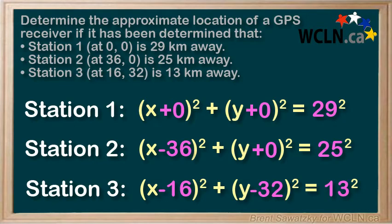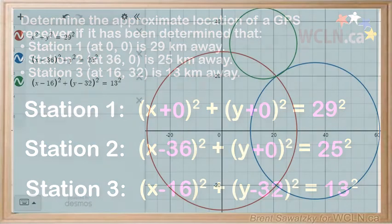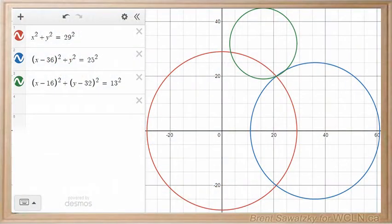And we have our equations, so let's open up Desmos and plot these equations, representing the station locations as the center of the circles, and their distances from the receivers as the edge of the circle.